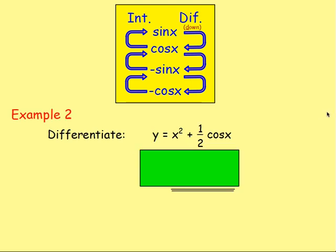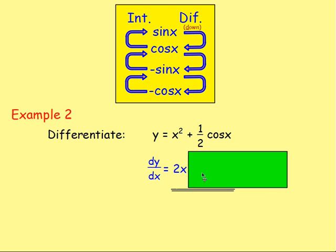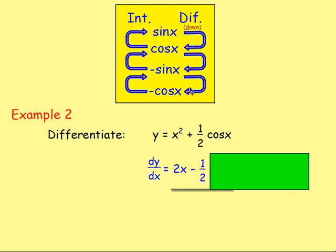Example two: Differentiate y = x² + ½cos x. Here we don't have any root signs, we don't have x in the bottom of a fraction, so we can go straight into differentiation. Doing that, dy/dx: differentiate x² to get 2x. And if you differentiate ½cos x, you bring in the negative — differentiating cos goes to negative sin. So instead of plus a half, you'd have minus a half, and the cos would go to negative sin, so the plus cos goes to negative sin.